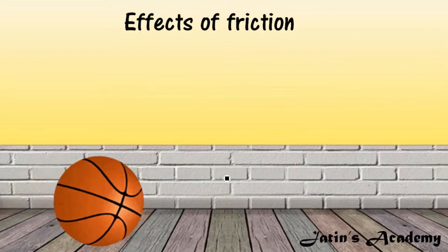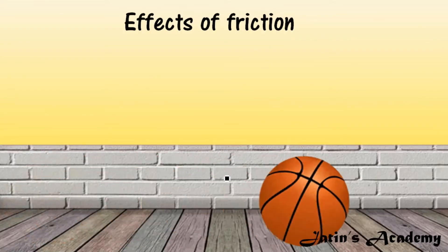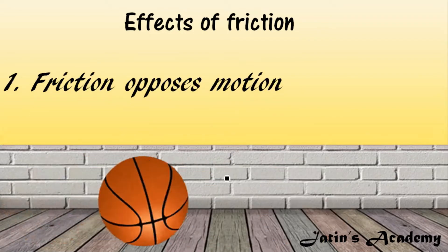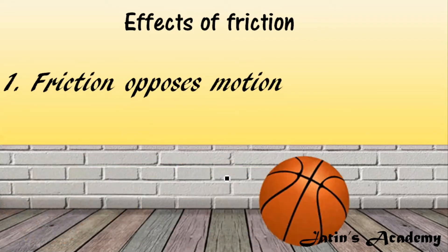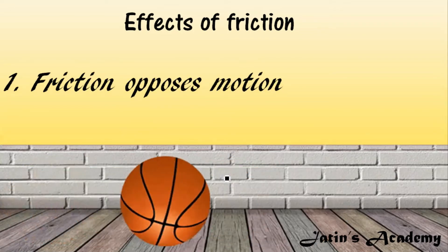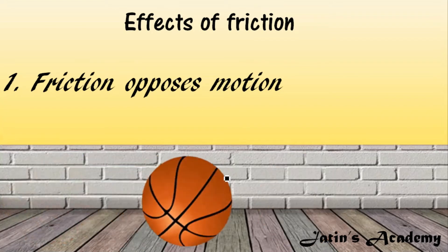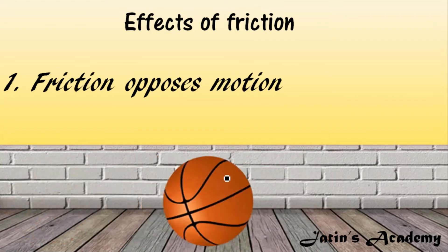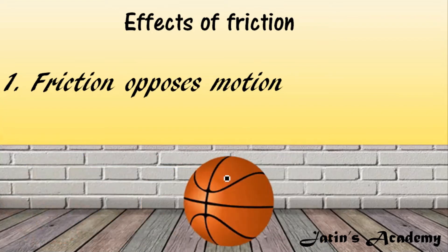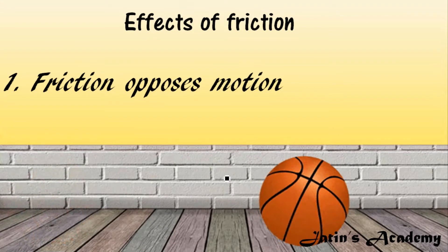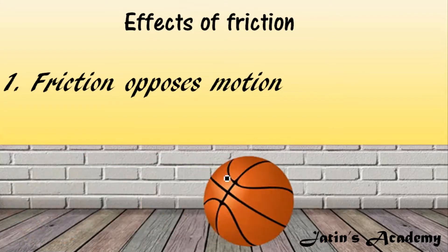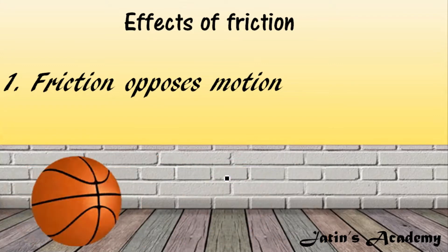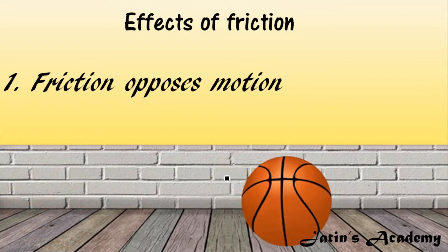Next we are having effects of friction. The first effect of friction is that friction always opposes motion — friction always slows down the motion of an object. When interlocking between two surfaces is more, friction will be more. So friction always opposes motion.